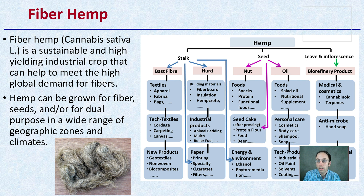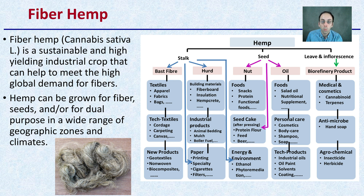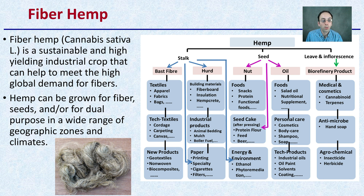We also have fiber hemp. Within hemp there are different subsets, and fiber hemp is a sustainable and high-yielding industrial crop that can help meet high global demands for fibers. It's used for actual fiber production — for clothing, for example. Hemp can be grown for fiber, seeds, or dual purpose across a wide range of geographic zones and climates, making it favorable to grow in different areas. The products it produces can also be used for a wide variety of textiles, foods, cosmetics, medicines, and antimicrobials.